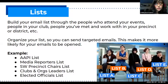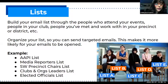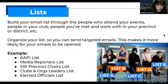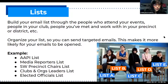So building lists — you can basically build it through people who attend your events, whether virtual or in person. The list can incorporate people in your club, people you've met and worked with in your precinct and district. For sign-up sheets, it'd be like you put in your name, number, email, and whether or not you want to join your email list. What's more important is organizing your list so you can send targeted emails. It just makes sense to send targeted emails — it's more relevant and makes your emails more likely to be opened.